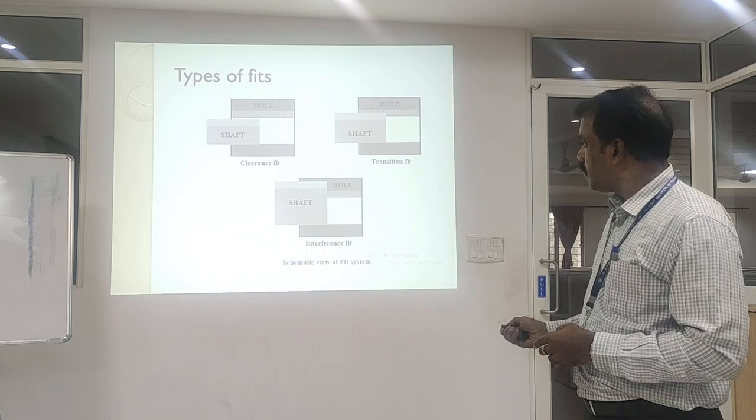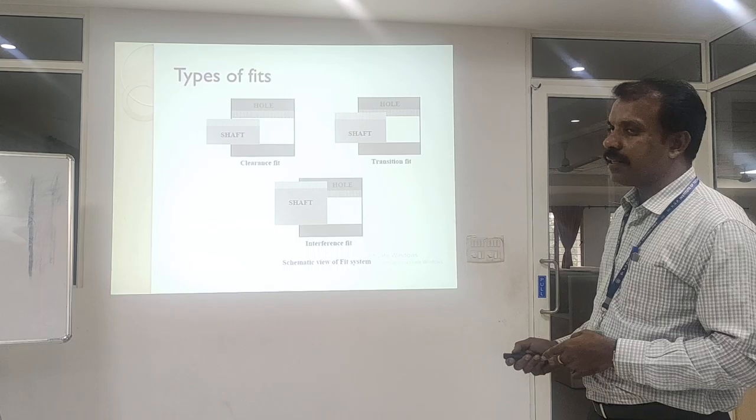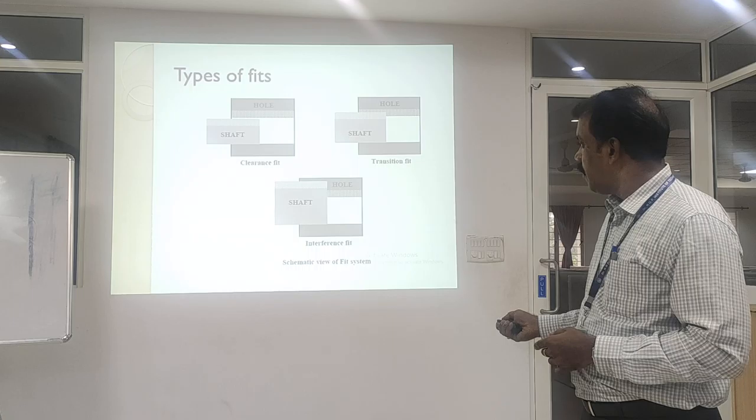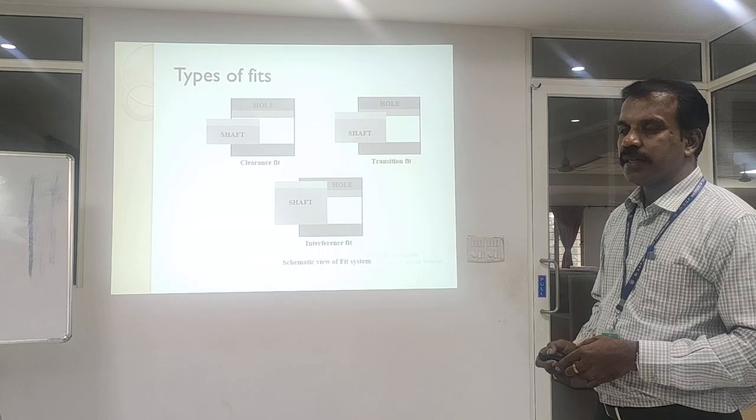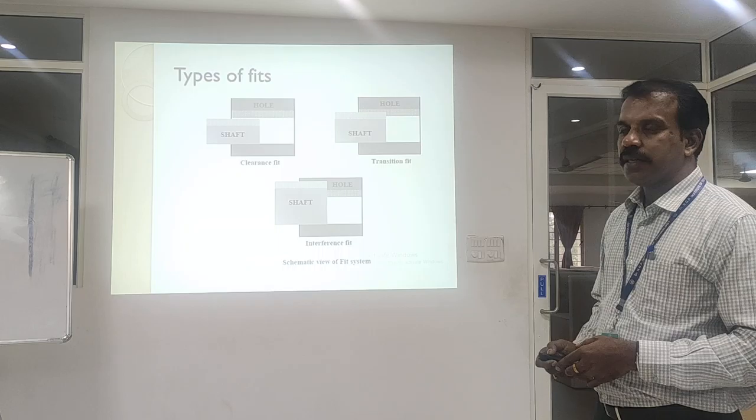The third type is interference fit, which is quite complicated. In this case, the minimum diameter of the shaft will be greater than the maximum diameter of the hole. This is what we call an interference fit, where you have a very tight movement between the shaft and the hole. Therefore, you have to make some modification either to the shaft or to the hole to achieve a proper fit. These are the basic fundamentals about fits.